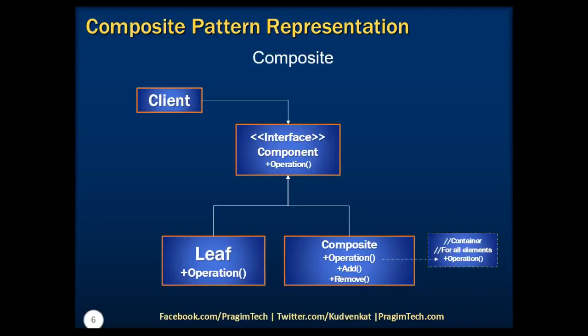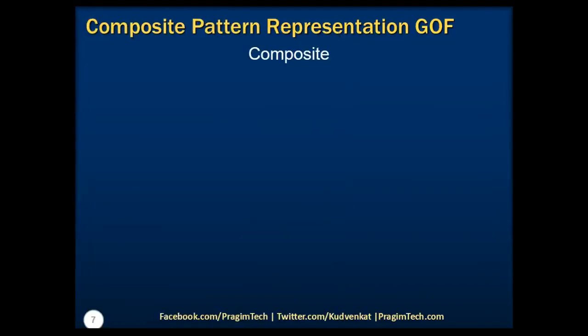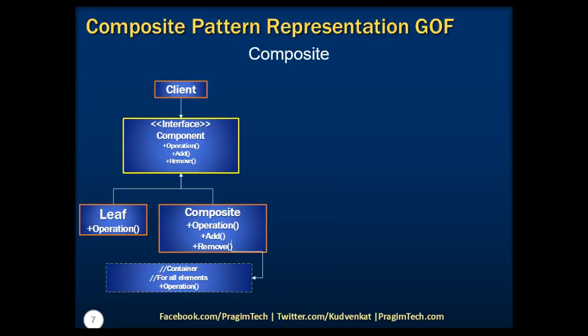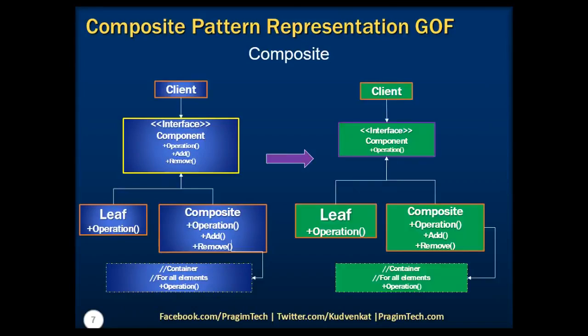If we compare the previous and the current representation, notice that we have changed the component methods to have ones which can be implemented by both leaf and composite nodes. Additionally, we have add and remove methods at the composite level. Notice that at the component level, we have changed it a bit to adhere to the SOLID design principles. After all this, you might be wondering what is composite, what is leaf, and what's all this design pattern about?